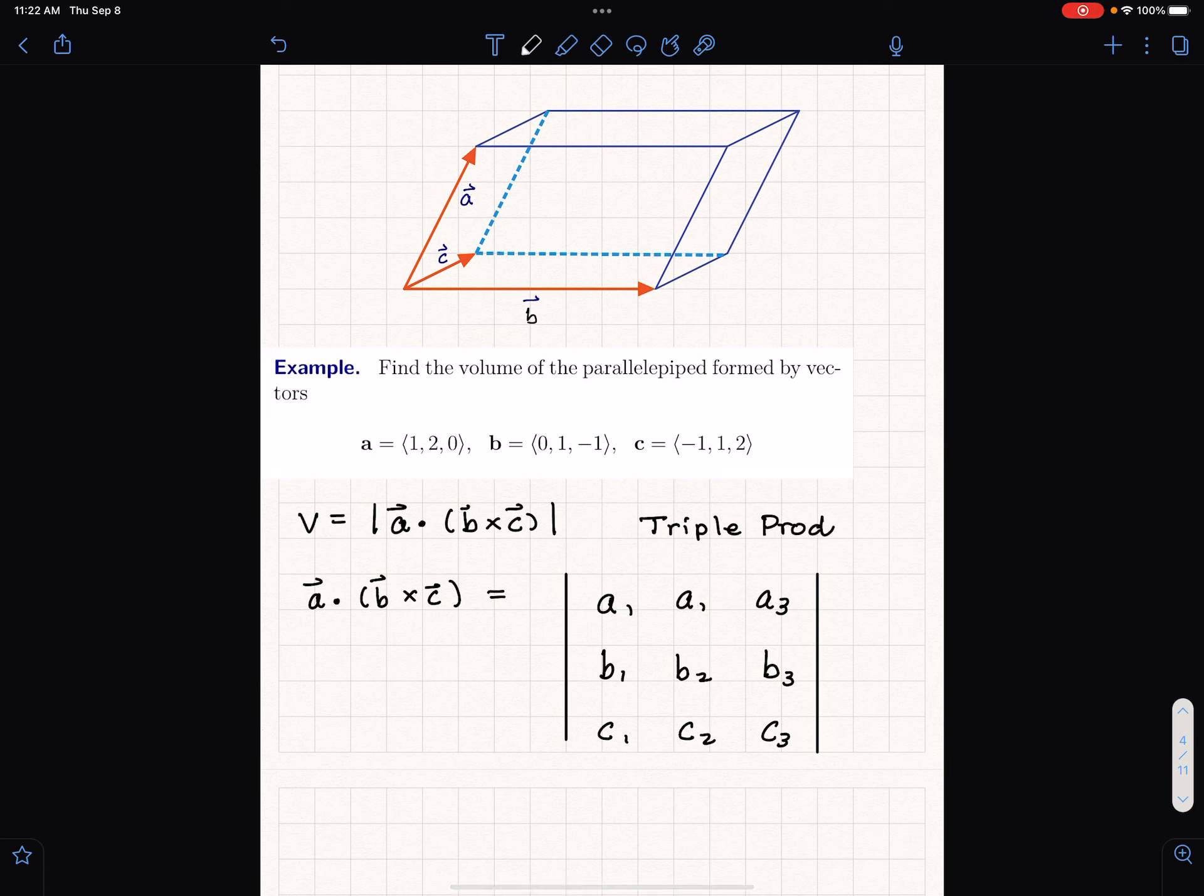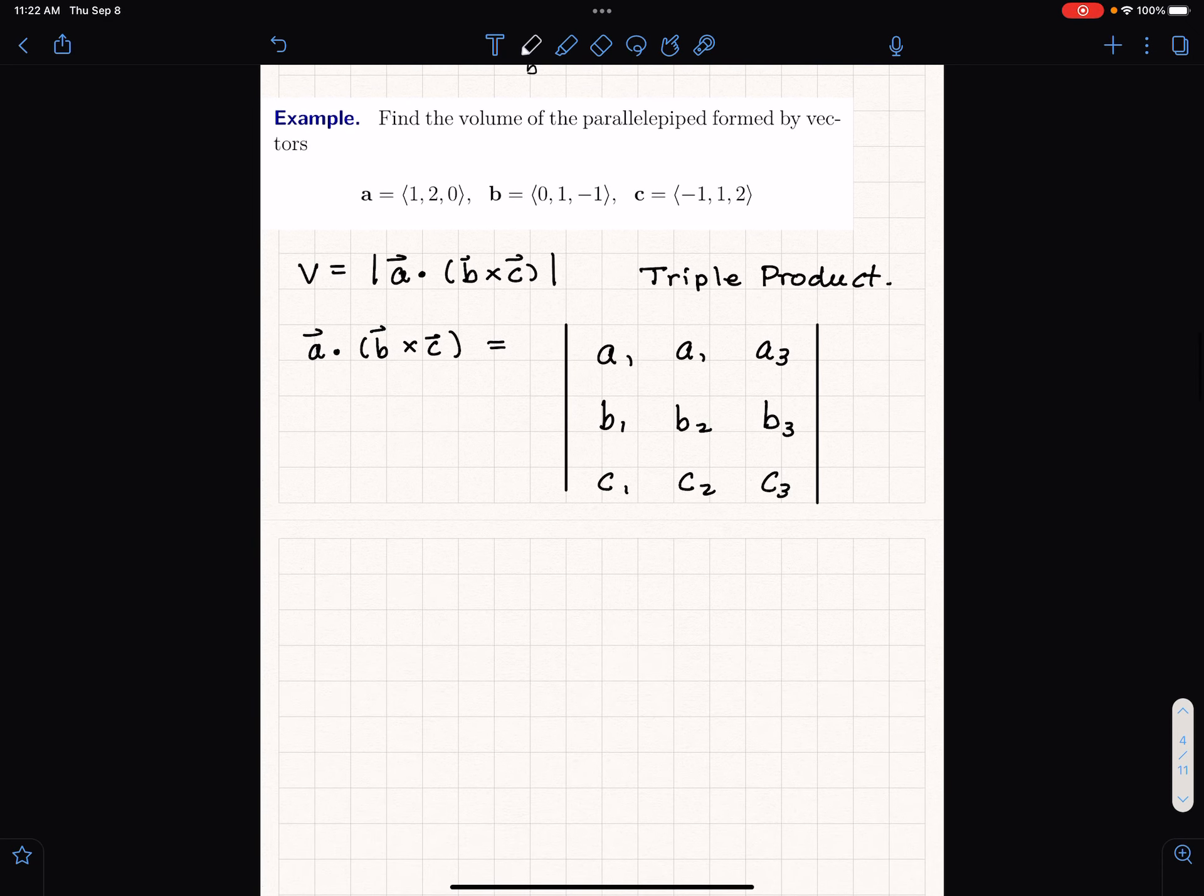When we get an answer, if it's negative we'll make it positive. It's a scalar so we'll get a number out of this. Let's be careful to put the right numbers in. I'm looking at a is one two zero, b is zero one negative one, and c is negative one one two.